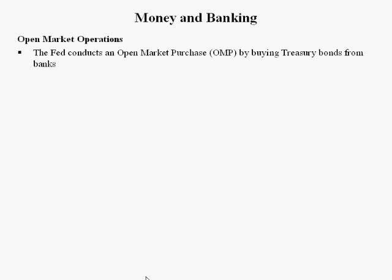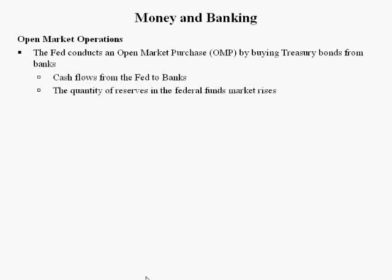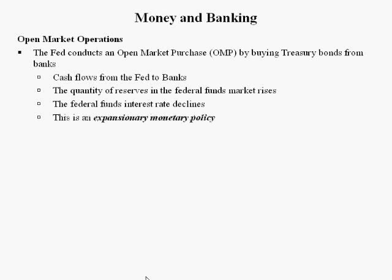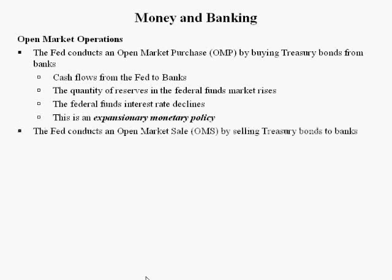The Fed conducts an open market purchase, which was kind of discovered by accident circa 1920, when the Fed retired a bunch of war bonds and noticed that the money supply really jumped up. The Fed conducts an open market purchase by buying Treasury bonds from banks. Cash flows from the Fed to banks, the quantity of reserves in the Federal Funds market rises, and the Federal Funds interest rate declines. This is called an expansionary monetary policy.